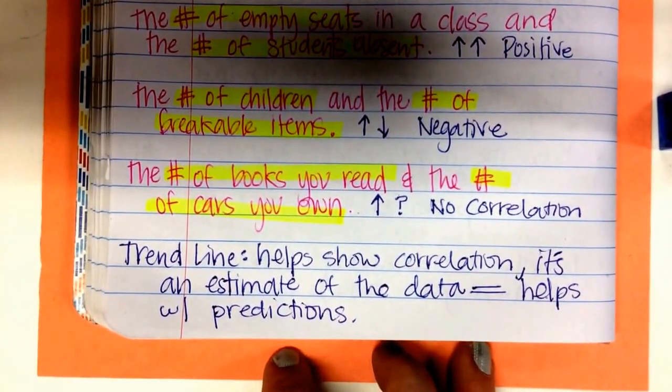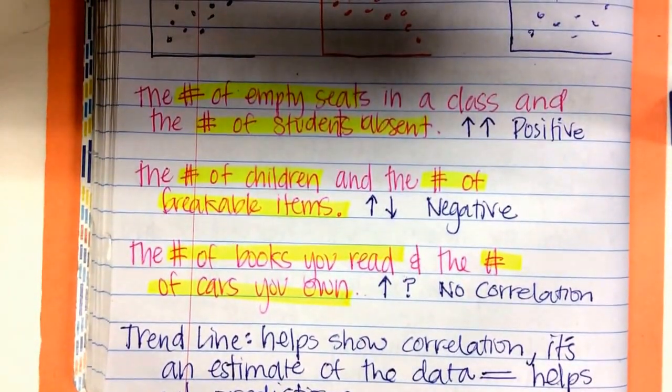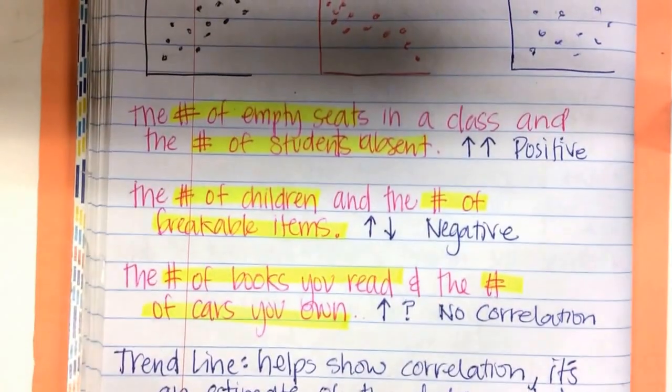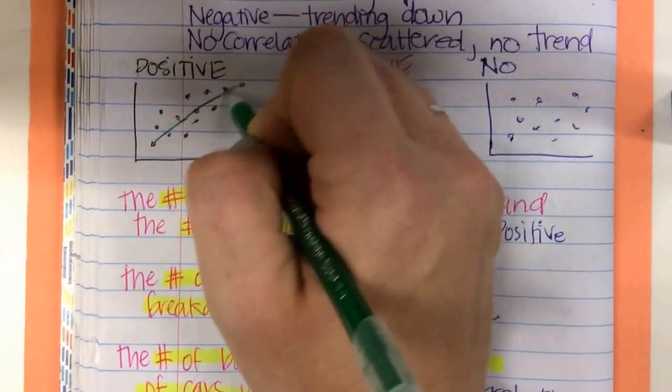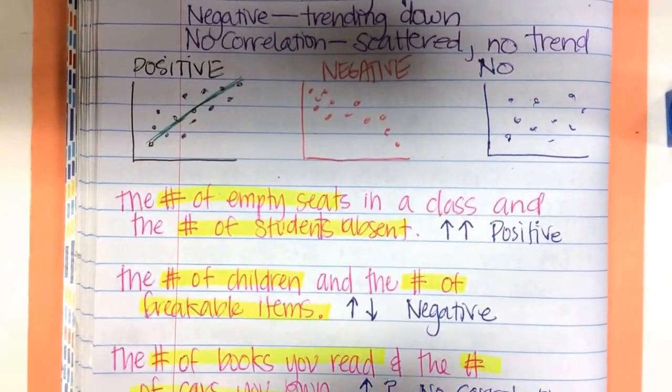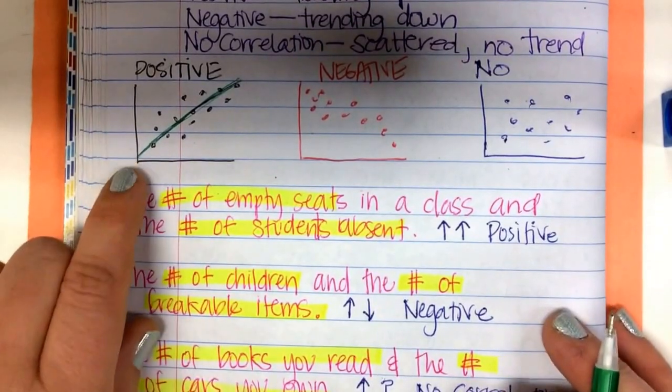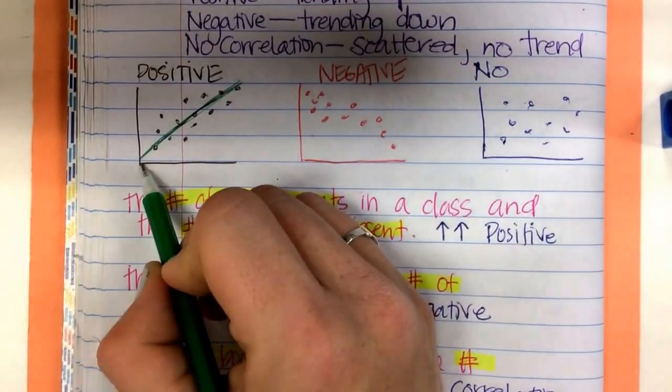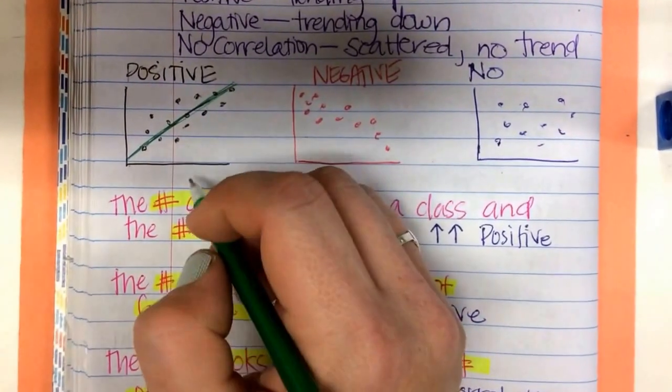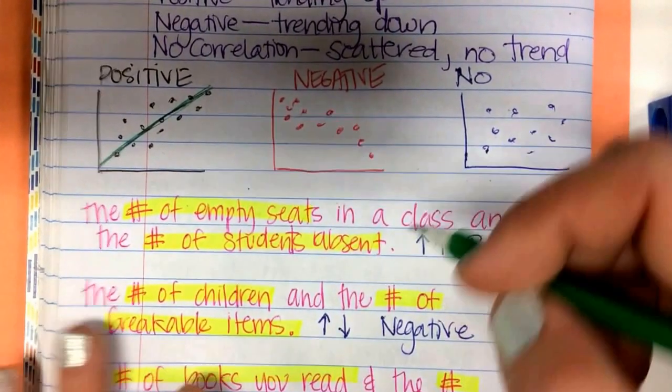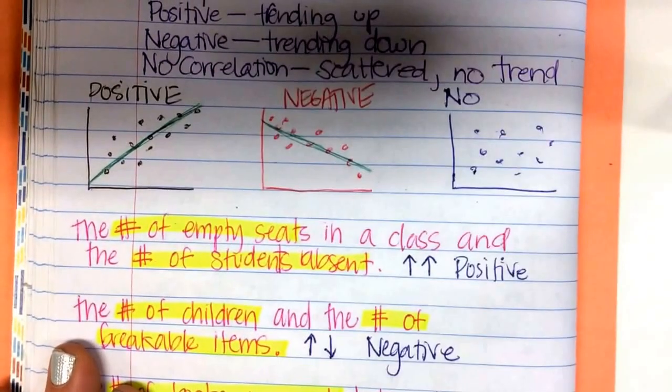If you go back up to those three graphs you made up here, a trend line is just basically a line that goes to the middle of your data. It kind of follows the data. So this data shows me it doesn't quite start at the very bottom. It's a little bit above. Now your graph is going to look a little different than mine because they're freehand, right? So this trend line kind of looks like that.